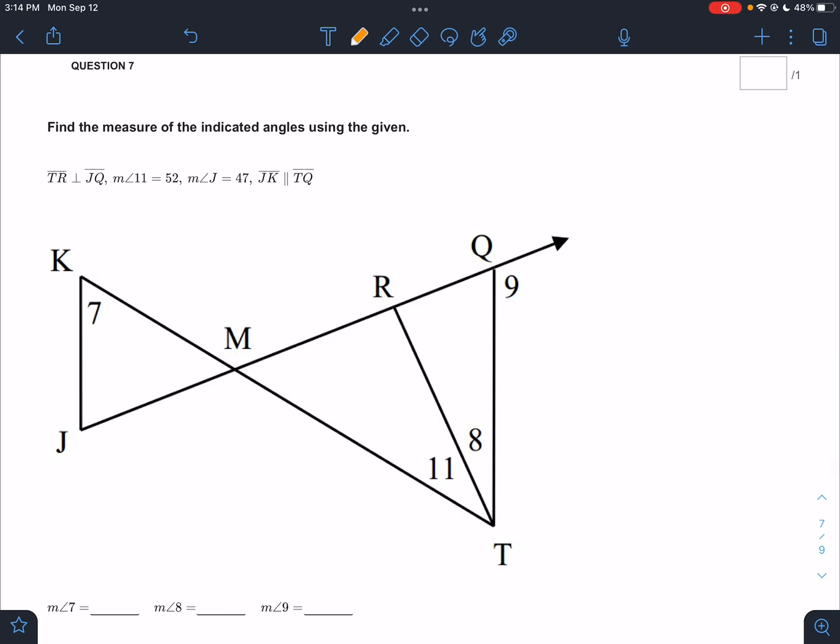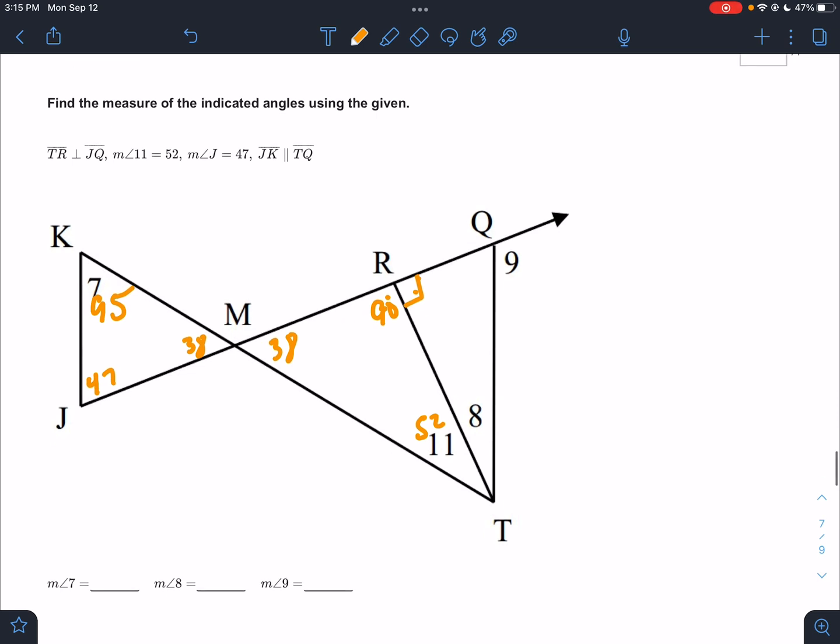TR is perpendicular to JQ. So that means this is perpendicular. That means this is a 90 degree angle. It's going to be 90 degrees on both sides of that, just so we remember. Angle 11 coming in at 52. So if that's 52, then I know that this has to be 38, right? Because those three angles have to make a triangle. So this is a right triangle. We know that this is 90 because of the right angle. So then we have 38 and 52. That means this is 38. We have angle 11 is 52. Angle J is 47. Here's J down here coming in at 47. Well, if that's 38 and 47, that would be 85, which means angle 7 would have to be 95.